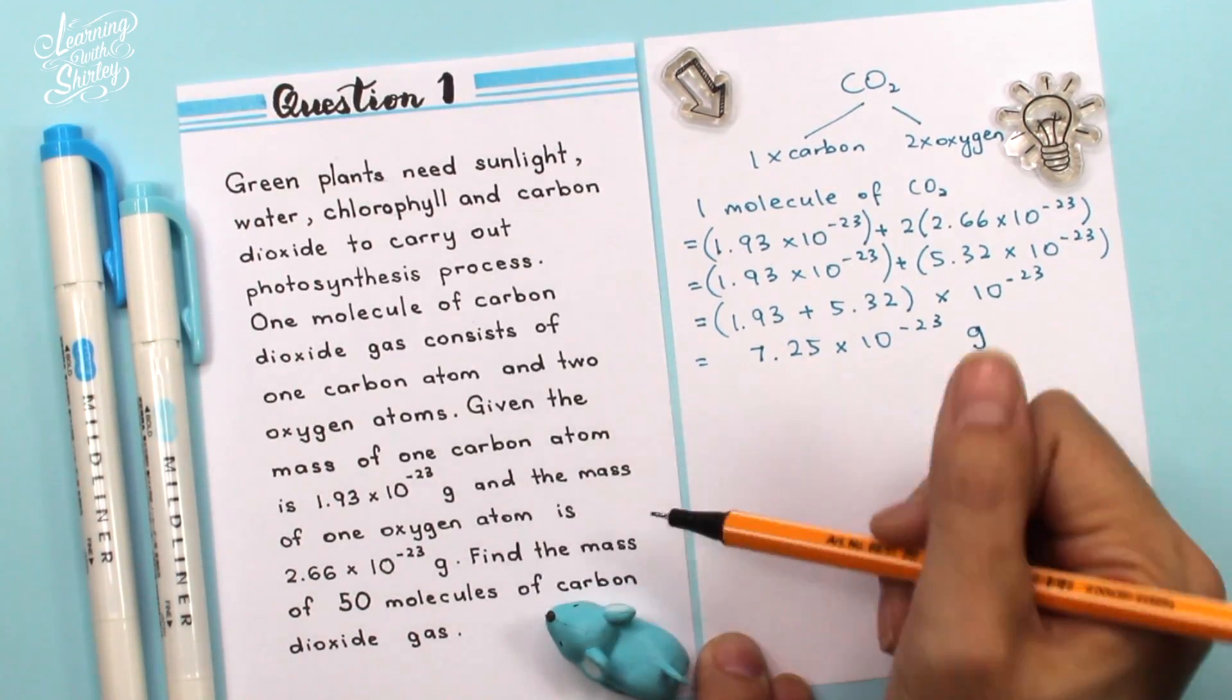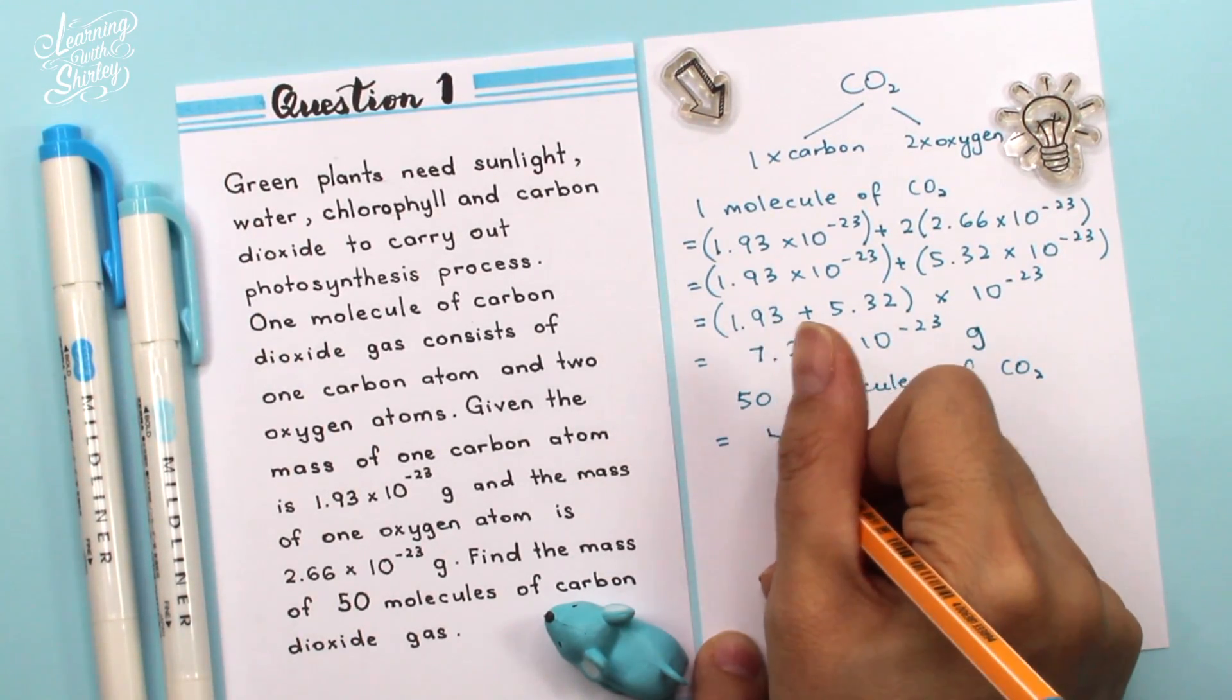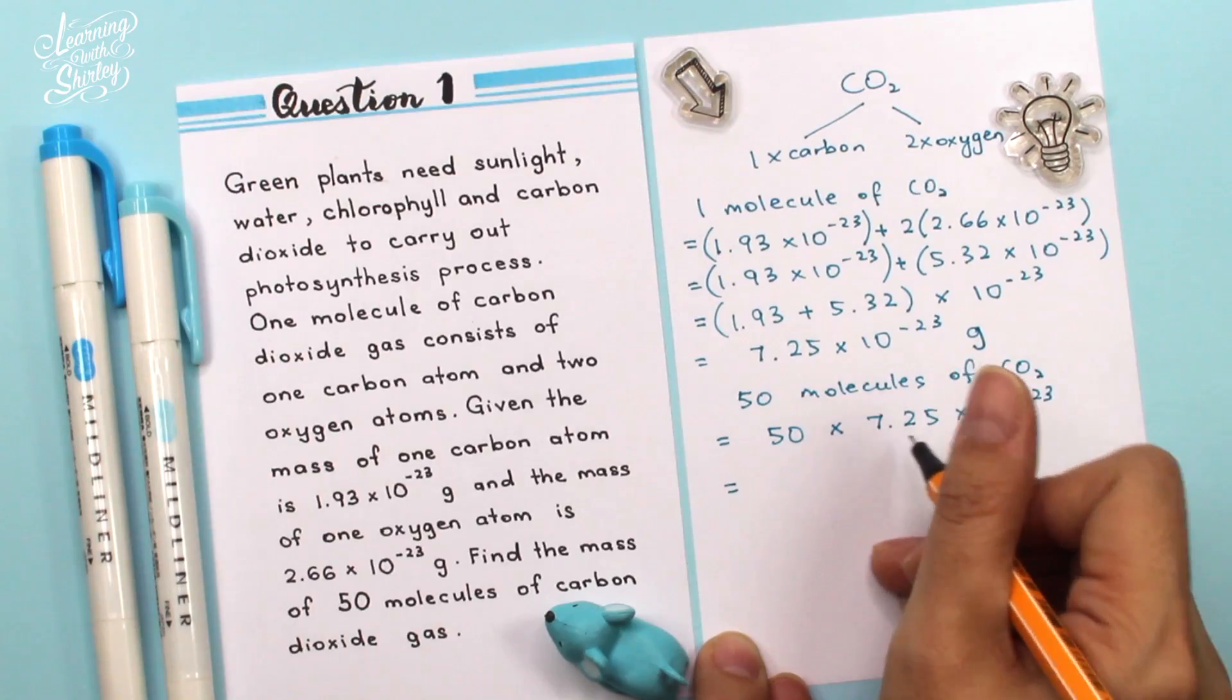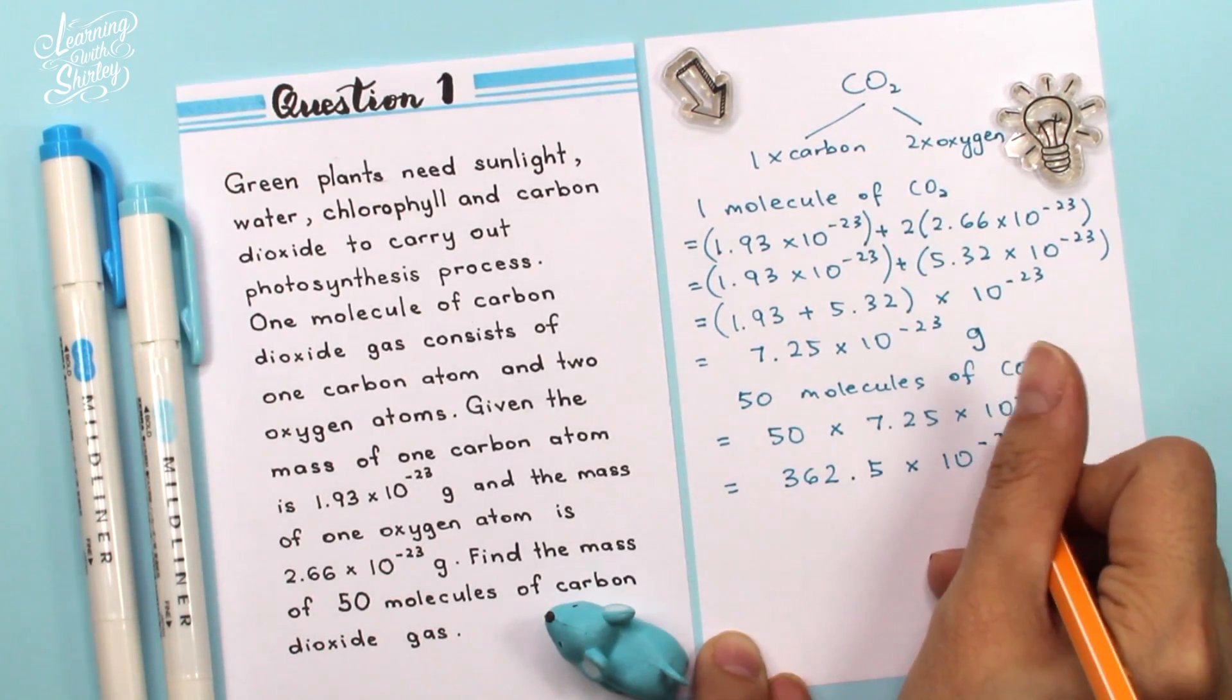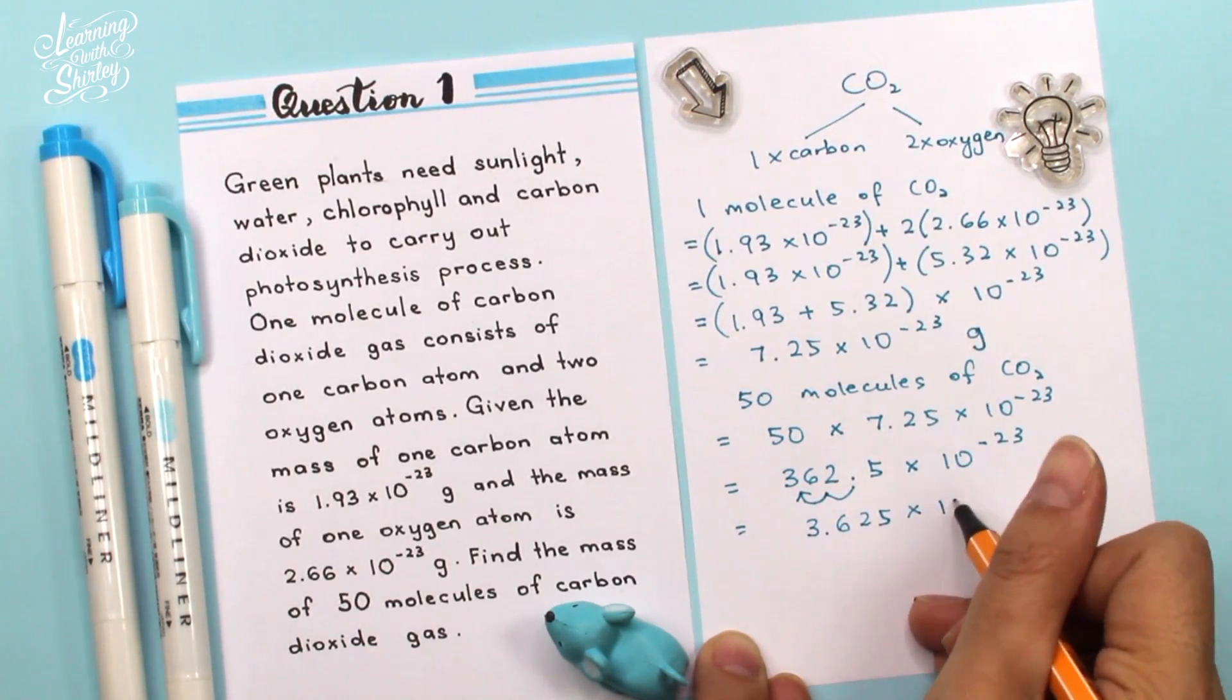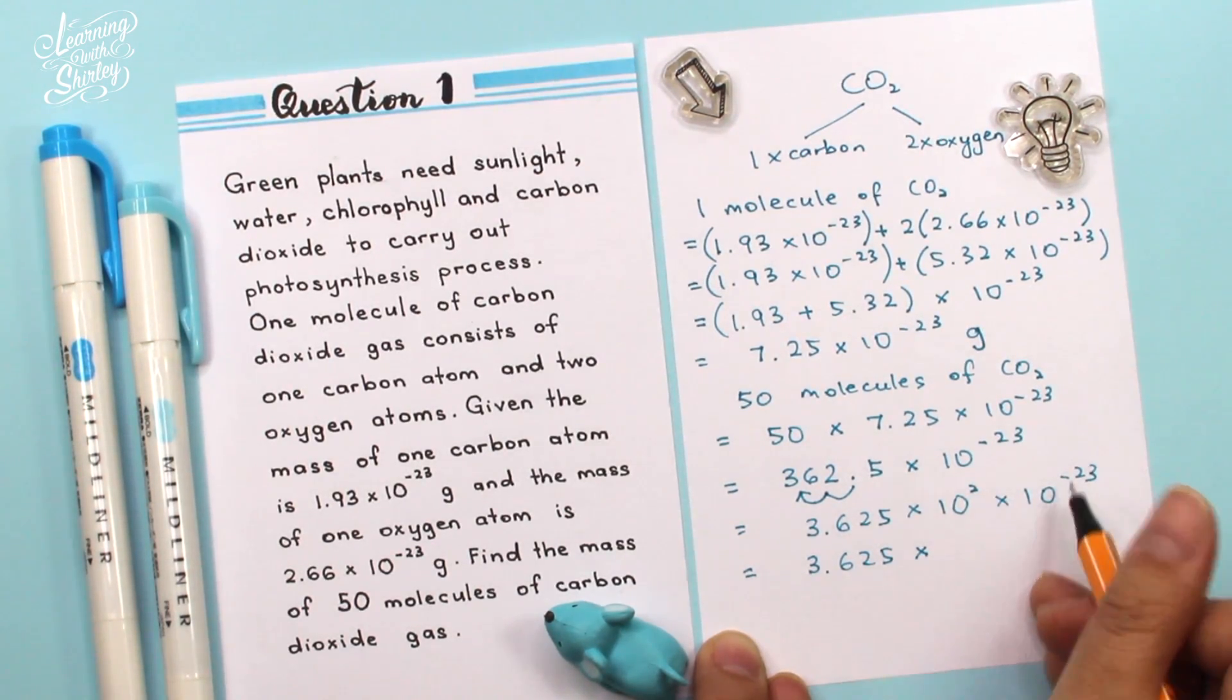So to find the mass of 50 molecules of carbon dioxide gas, it will be 50 molecules of CO2 equals 50 multiplied with this answer that we have gotten just now, 7.25 times 10 to the power of negative 23. So 50 times 7.25, we get 362.5 times 10 to the power of negative 23. So to change this to standard form, we have to move this decimal point two places to the left. So become 3.625 times 10 to the power of 2. Then we bring this down, 10 to the power of negative 23.